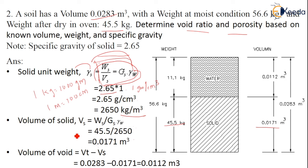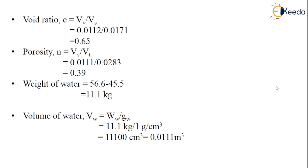The volume of voids is obtained by subtracting the volume of solids from the total volume: 0.0283 minus 0.0171 equals 0.012 m³. Void ratio e equals Vv/Vs, giving a value of 0.65. For porosity, n equals volume of voids divided by total volume: 0.012 divided by 0.0283, giving a calculated value of approximately 0.39.